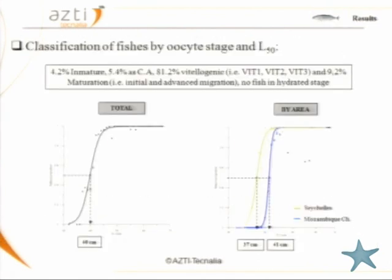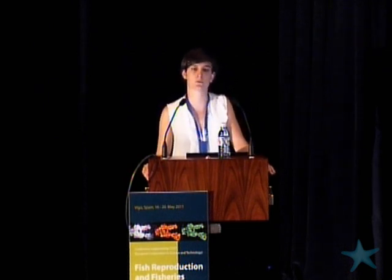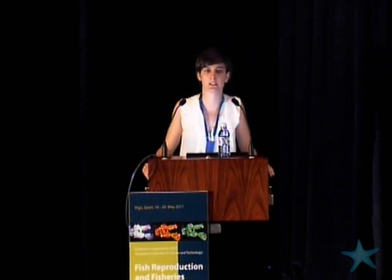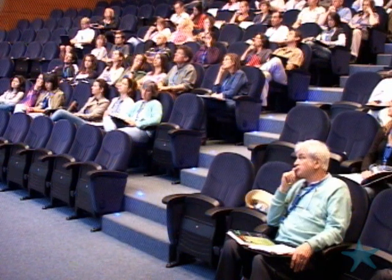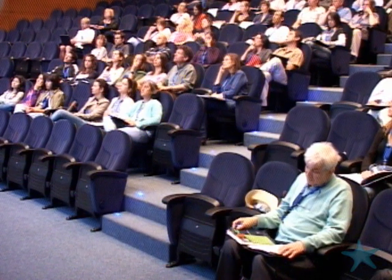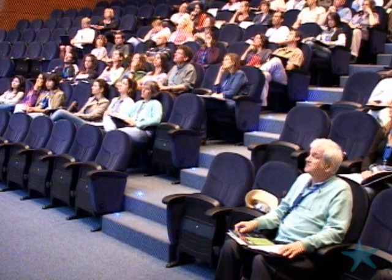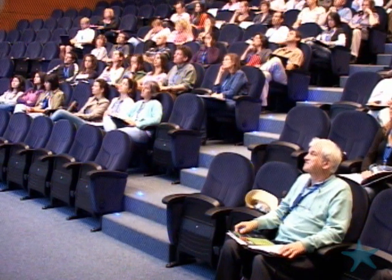Going to individual and population level, we classified all females into each reproductive stage. We saw that there were almost no immature females and almost all were in vitellogenic stages. No fish were found in hydrated stages. To estimate length at first maturity, we applied a logistic regression. Using pooled data, we estimated a length at first maturity of 40 centimeters. When analyzed by area, we saw differences, with lower values for the Seychelles and higher values for the Mozambique Channel.